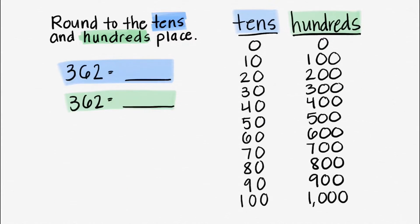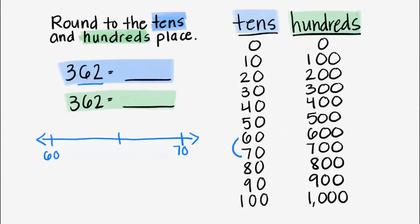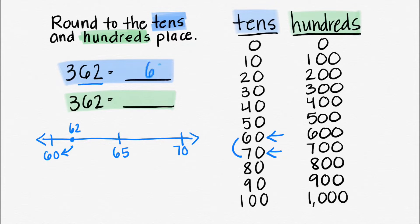Let's round 362 to the tens place. We're only going to look at the tens. 62 is somewhere between 60 and 70. Let's make our number line: 60, 70, halfway is 65. 62 would be before the 65. Is 62 closer to 60 or closer to 70? It's a lot closer to 60, so we need to write 60. But we need to add the 3 from the hundreds place — 360.